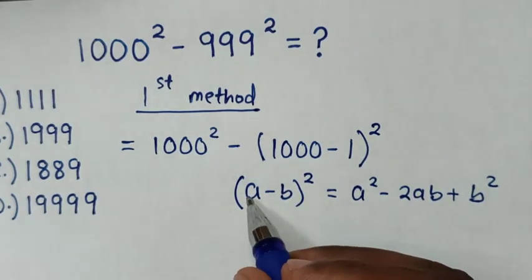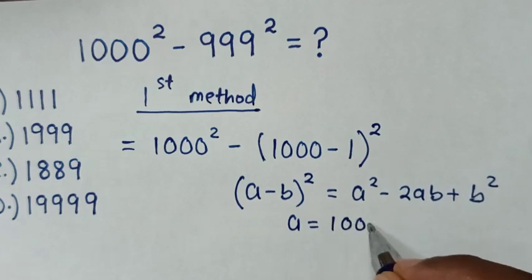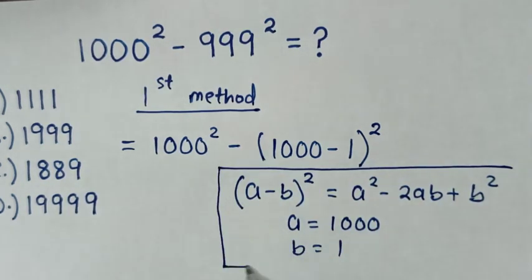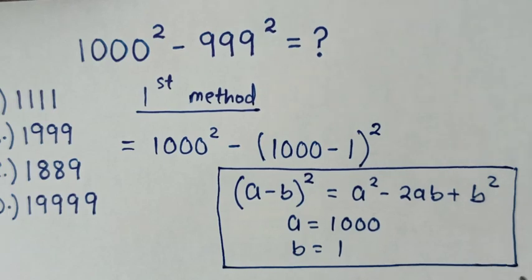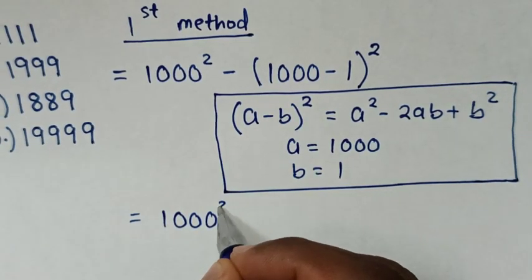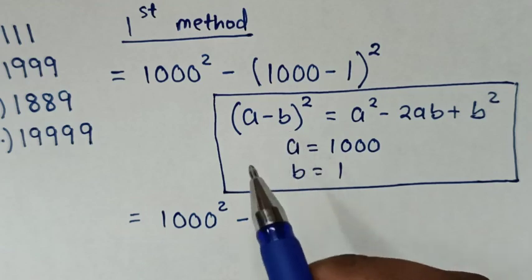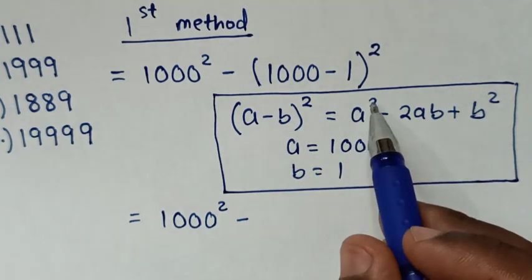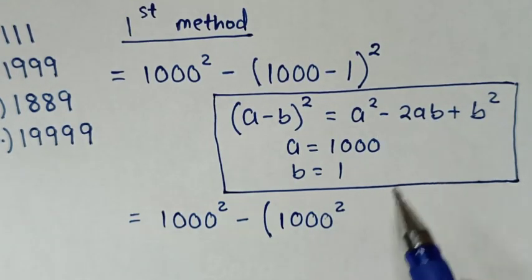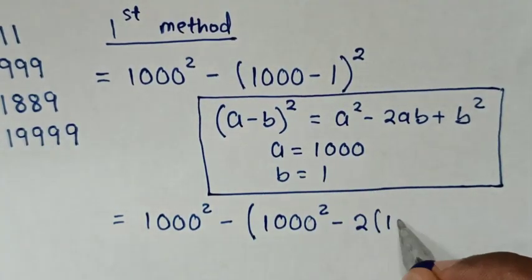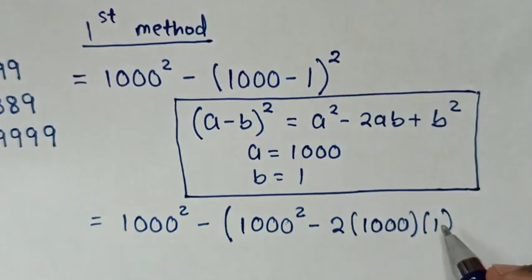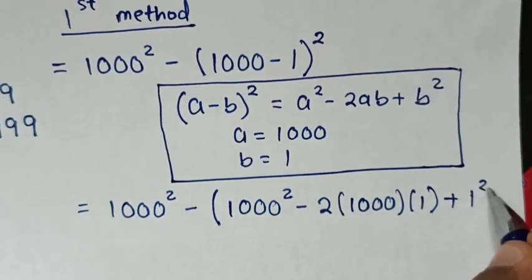So, when we compare: A will be equal to 1000, and B is equal to 1. It will be equal to this 1000 square, then minus — this part is in this form, which is equal to this form. So, A square is 1000 square. It will be bracket 1000 square, then minus 2AB — so it will be minus 2, A is 1000, times B is 1. Then plus B square — so it will be plus 1 square. Then bracket.